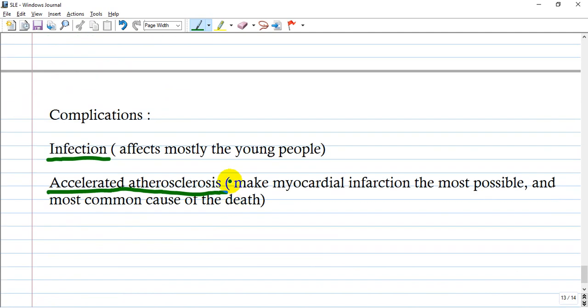What are the complications of lupus erythematosus? We know the two main complications: infection and accelerated atherosclerosis. Mostly young people are affected by infections. Why? I can give you the answer: because patients have leukopenia, lymphopenia, and compromised immune systems that decrease the self-safety of the organism. Accelerated atherosclerosis makes myocardial infarction the most possible and most common cause of death from vasculitis and infection of the coronary vessels. Have a good time and enjoy my lecture. See you.